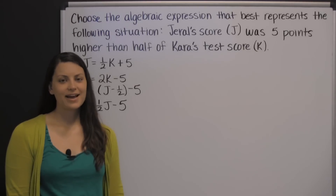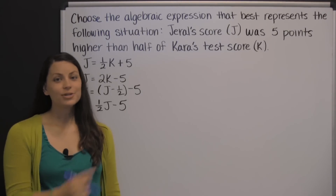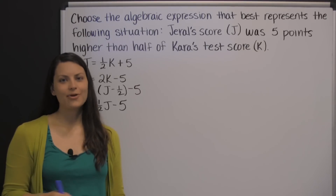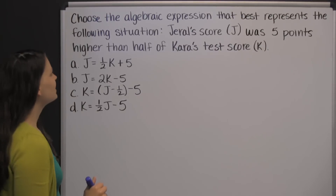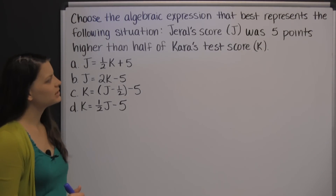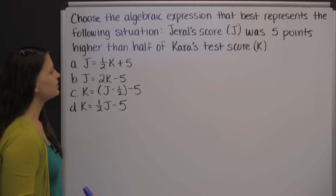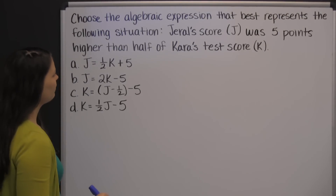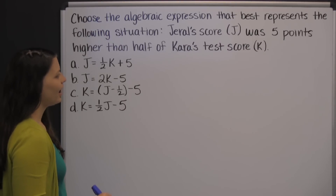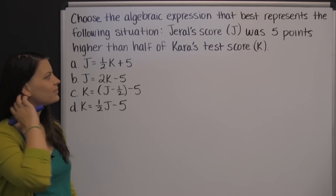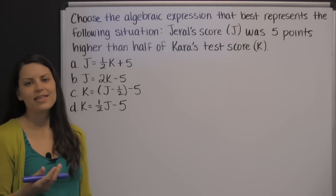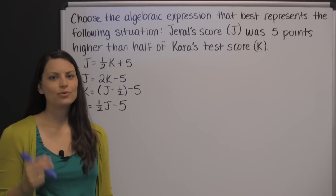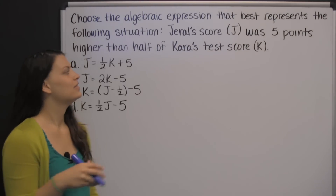The TEAS test has a lot of word problems. Here's one example of a type you could encounter. It says: choose the algebraic expression that best represents the following situation. Gerald's score, J, was five points higher than half of Kara's test score, K.